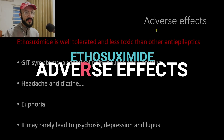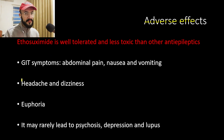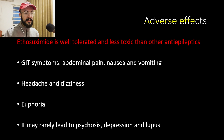Now let's talk about adverse effects. Ethosuximide is well tolerated and less toxic than other anti-epileptics. The main side effects are dose-dependent, occurring at higher doses, and include GI symptoms such as abdominal pain, nausea and vomiting. Patients may also experience headache, dizziness, and euphoria.